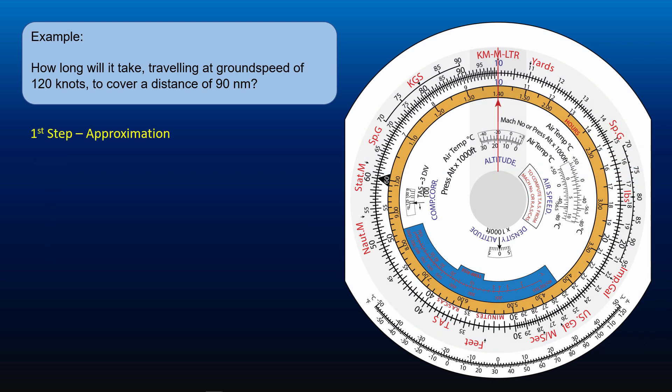First we will get the approximation of the answer. 120 knots mean we travel 120 nautical miles in an hour. Thus, to travel 90 nautical miles, we need a little less than an hour.